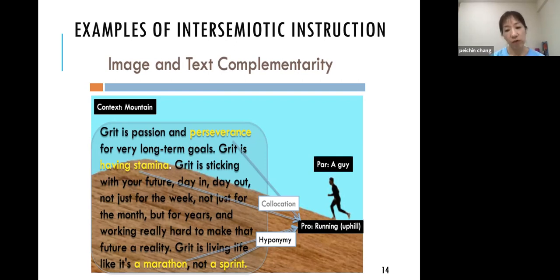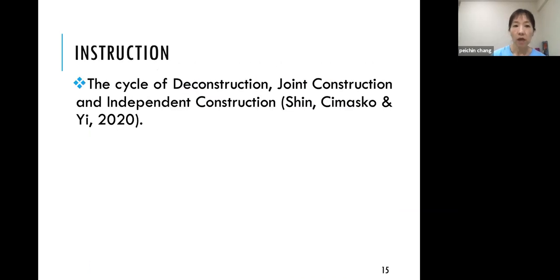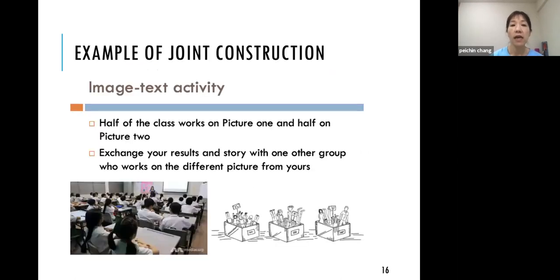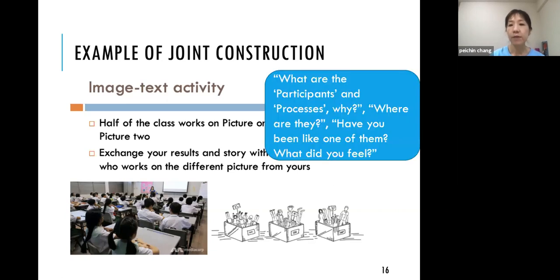In the text, perseverance naturally co-occurs with running uphill — it takes perseverance and stamina. Marathon and sprint are types of running, showing how text and image connect. The teaching cycle involves deconstruction of the metalanguage, joint construction, and independent construction. There are multiple tasks for joint construction including a midterm project and short reports. Students got into groups, were assigned different images, and were asked to identify participants and processes.